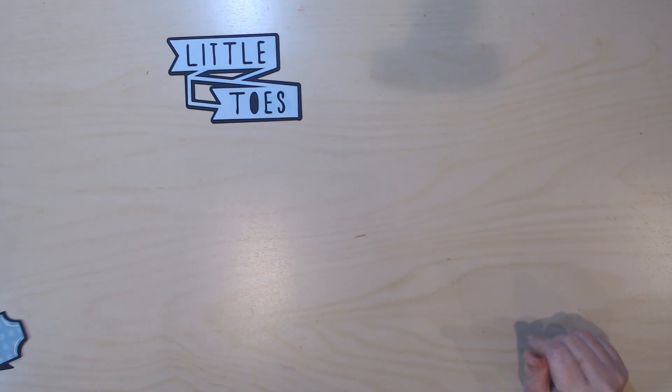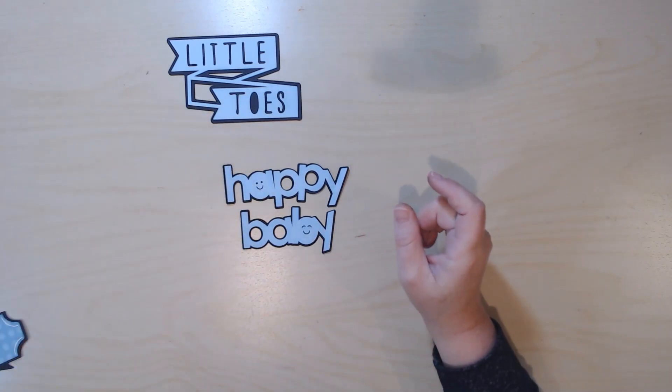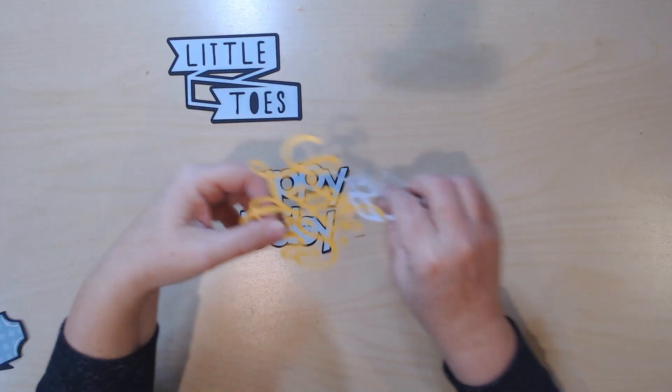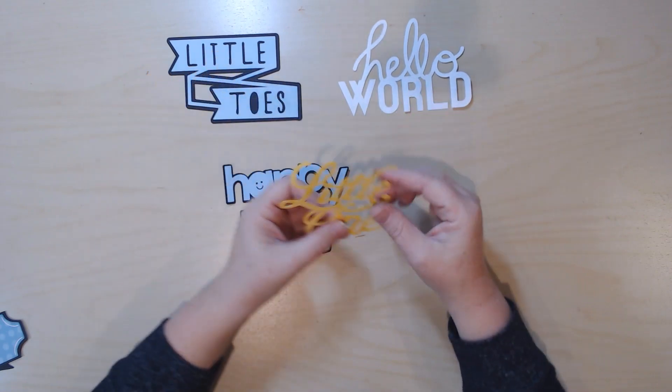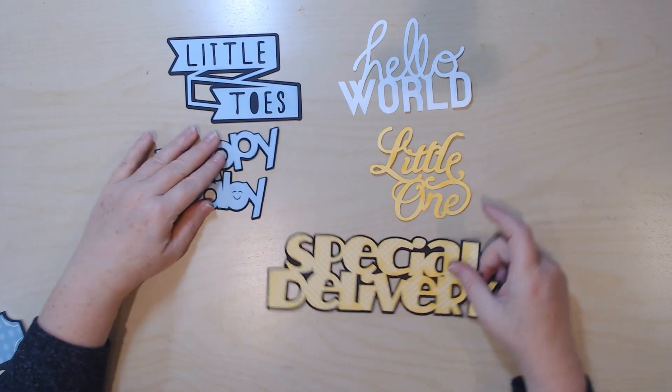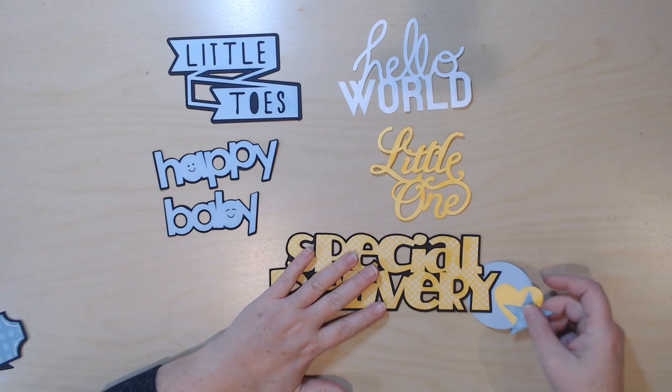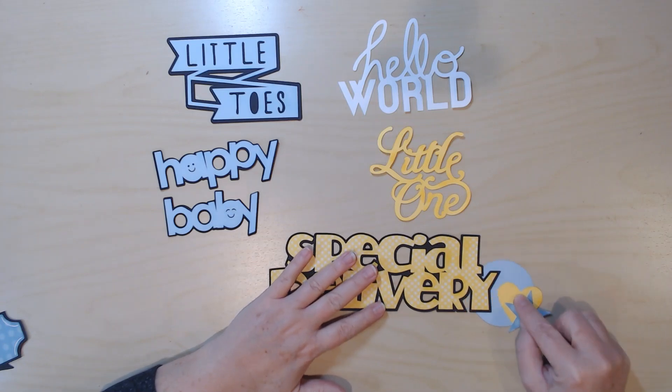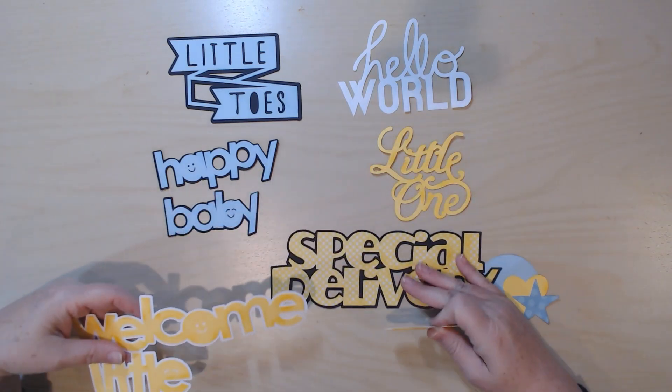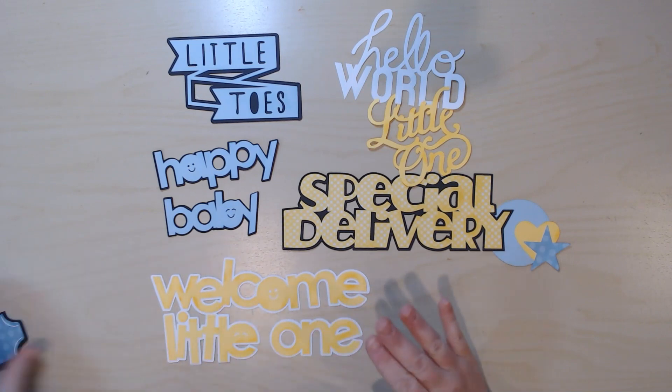I did some little baby things, so I did happy baby and I did some just really basic ones that I think would be good for card making. And then I did some scrapbooking titles, and each title has its own little cluster base to go with it, like each one of these layered titles does.